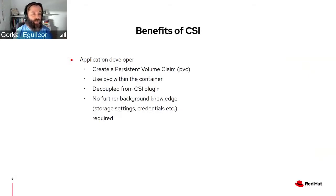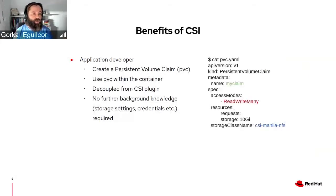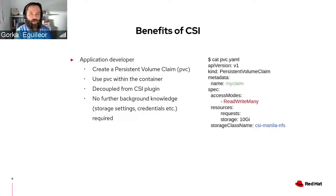From a vendor's point of view, the benefits of CSI are clear — you only have to develop one driver and you support all different container orchestrators. From a developer's point of view, you just create a persistent storage claim, and that works for every Kubernetes platform. You can use the same YAML and only need to change the storage class name from public to private cloud, decoupling all the storage information from the application.